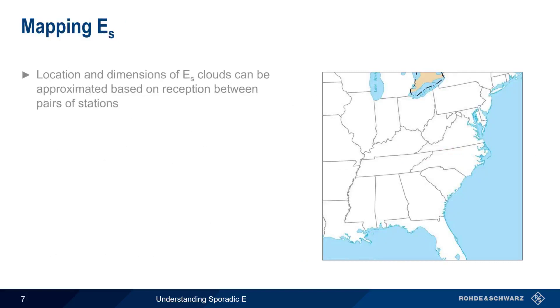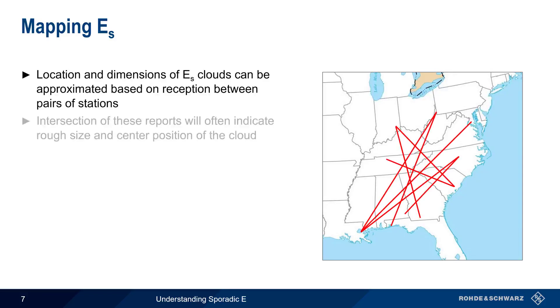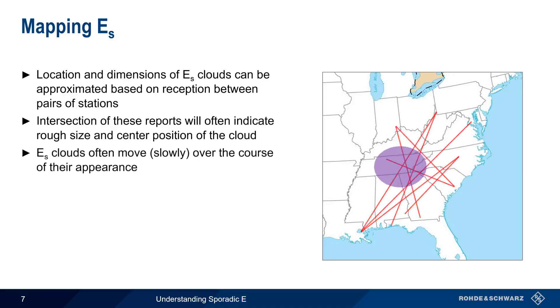We can map the location and dimensions of sporadic E clouds by looking at reception reports between pairs of stations. If we draw lines between transmitters and receivers, the intersection of these reports will often show the rough size and center position of the cloud. Sporadic E clouds are, however, not stationary, and tend to move slowly over the course of their appearance.